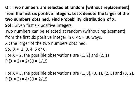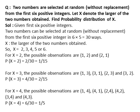For x=4, the possible observations are (1,4), (4,1), (2,4), (4,2), (3,4), and (4,3) because 4 is the larger of the two numbers obtained.